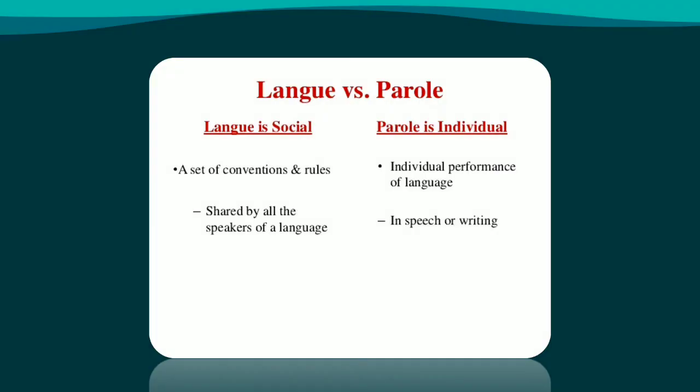To illustrate more, we can say that langue is social and parole is individual. When we say langue is social, it means that language is made up of shared rules — for example, word order rules such as SVO or VSO, meaning subject, verb, object. In Arabic or English, this word order will be shared by all speakers of the language.